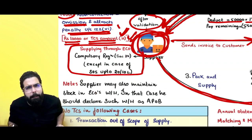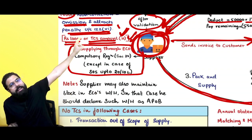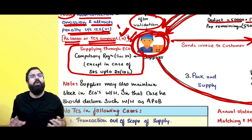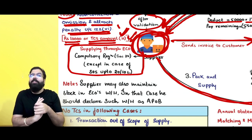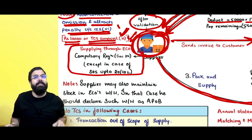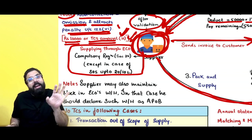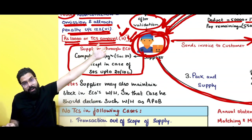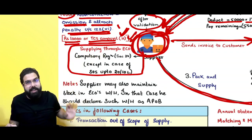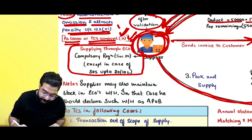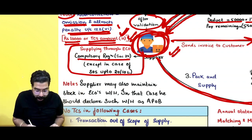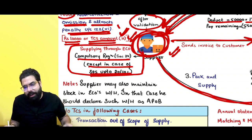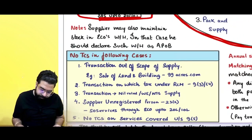Is the supplier supplying through e-commerce required to take compulsory registration? Yes — the e-commerce operator being the TCS collector also has to take compulsory registration, and the supplier will get credit only if they take registration. However, suppliers of services are exempted up to 20 lakh or 10 lakh. In that scenario, Flipkart or whoever is the e-commerce operator will not deduct TCS. Supplier of services supplying through e-commerce up to 10 lakh or 20 lakh threshold are not required to take registration.